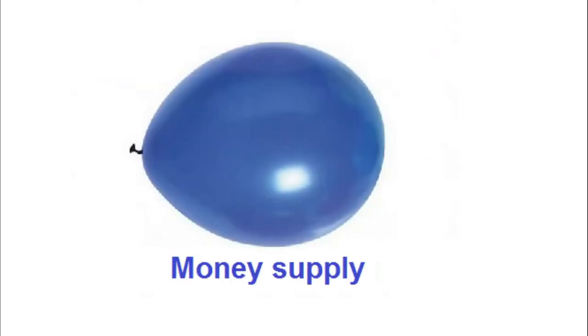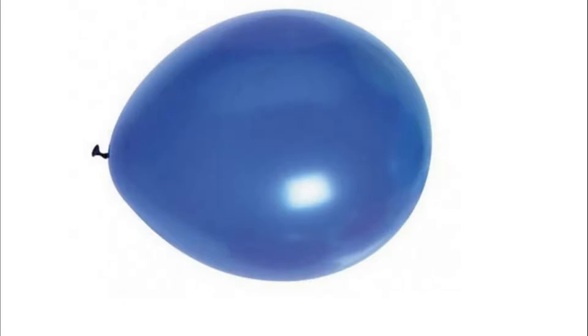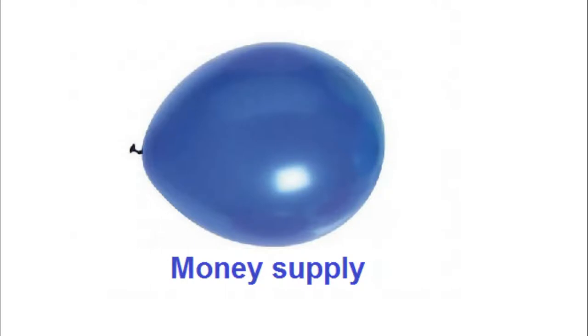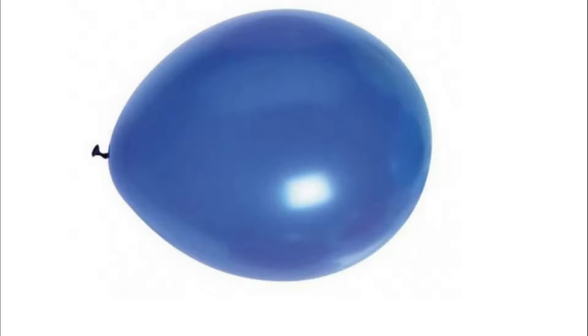Now let's return to the second consequence: the money supply is constantly increasing. Does this create inflation? We've seen that you need enough oil in the wheels to keep the economy running, but if there is too much currency it loses value — you need more of it to buy the same thing and prices rise. The money supply is constantly increasing when measured in Junés, so yes, prices in Junés are bound to rise.